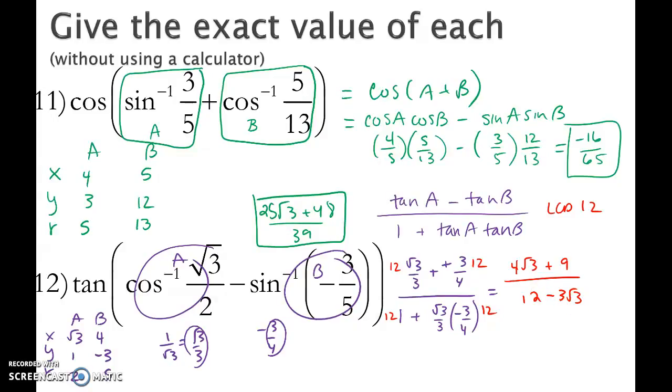Now at this point, nothing can reduce yet. So I'm going to go ahead and rationalize by multiplying by 12 plus 3 root 3 over 12 plus 3 root 3.